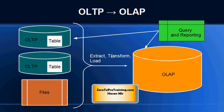In a typical enterprise environment, there are multiple online transaction processing systems running. For example, ERP is a type of OLTP system where transactions are happening frequently and the system is tuned to capture transactions in a fast manner, but it's not very well tuned to run deep analytical queries.